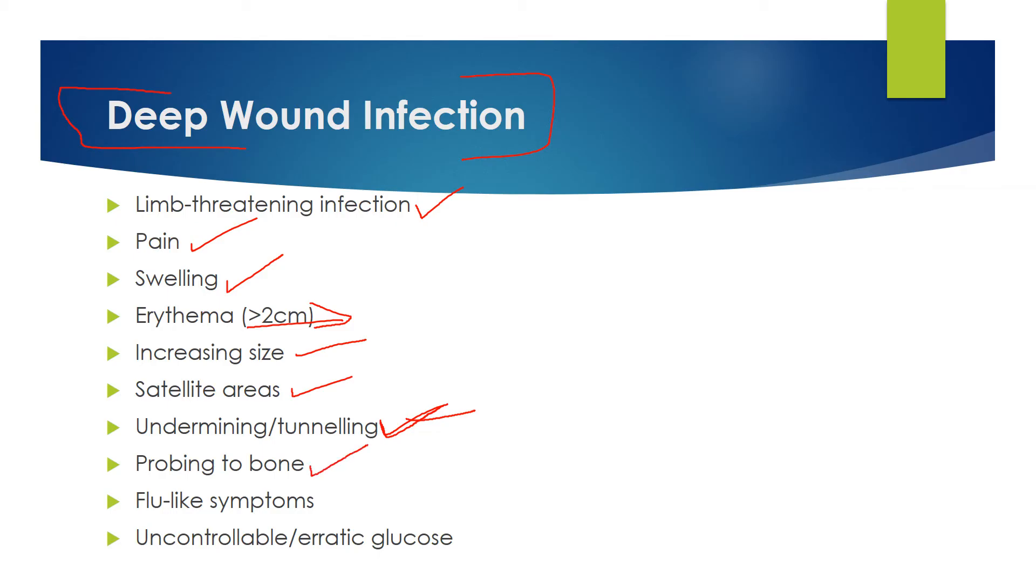Another thing is probing to the bone. So oftentimes, nurses take sterile q-tips and they poke into the wound and measure it. And depending on how deep it goes, it can be considered a deep wound infection. And obviously, if you touch bone, it's a very deep wound.